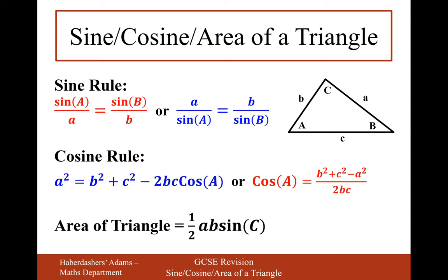These are the five rules you have to remember for sine, cosine and area of triangle — well, it's really just three. The sine rule has two different rearrangements, and the cosine rule also has two different rearrangements. Think of it as three formulas: the sine rule with sine or little a on top, the cosine rule rearranged to make cos A the subject, and the area formula: half AB sine C. Use the red ones to find missing angles and the blue ones for missing sides.